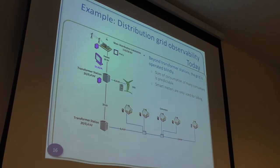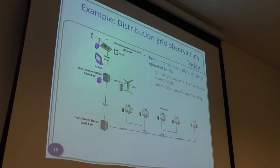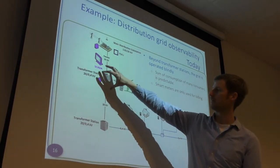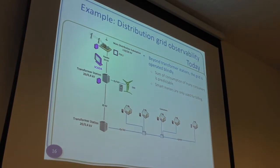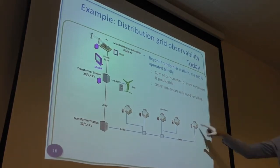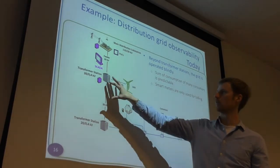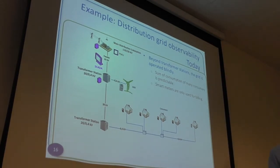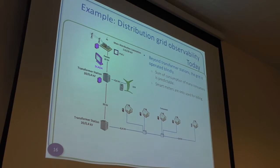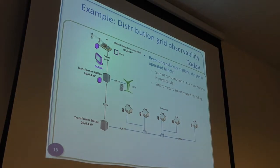To summarize the distribution grid of today: the SCADA system only goes down to transformer station level, meaning this whole lower part of the grid is operated blindly — you don't know exactly what's going on in the different houses. You can measure power use at the transformer level but you don't know who is using what until maybe the next day or end of the month. The utility companies usually have very good models, but that's what I'll argue on the next slide.